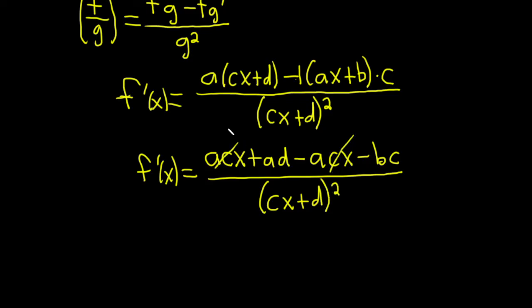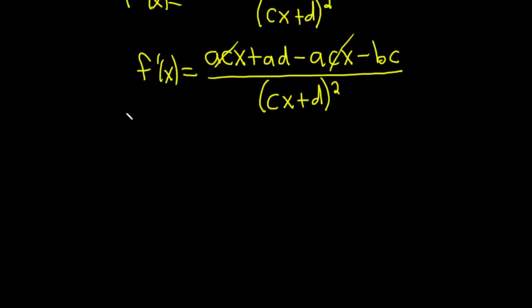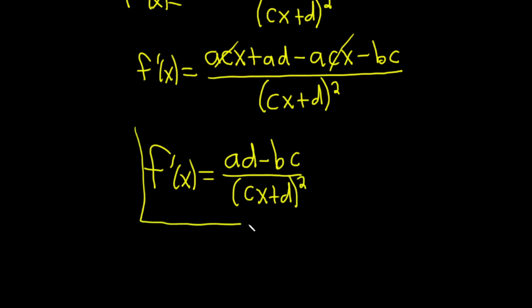These cancel, these cancel. So we're left with f prime of x. This is equal to ad minus bc, all over cx plus d squared, and that would be the derivative of our function.